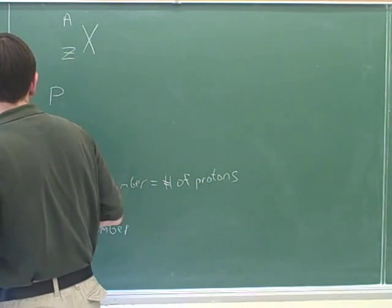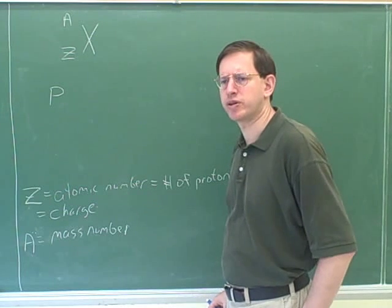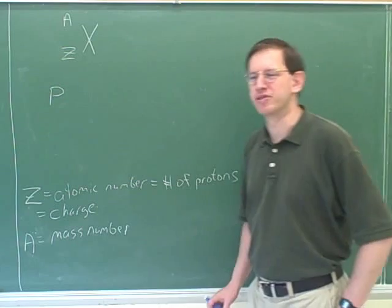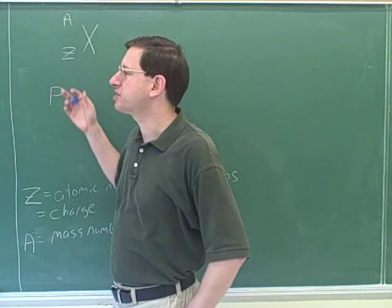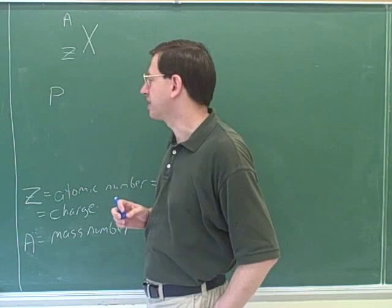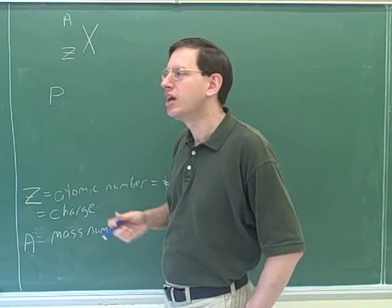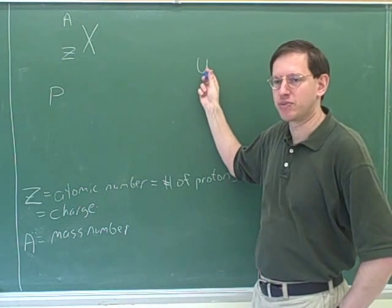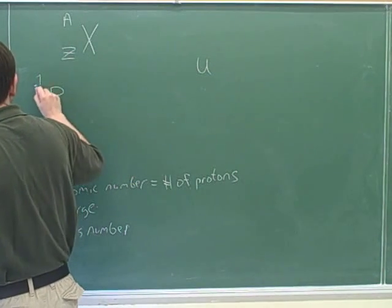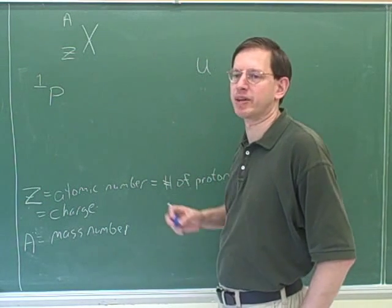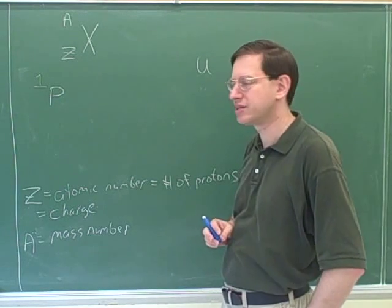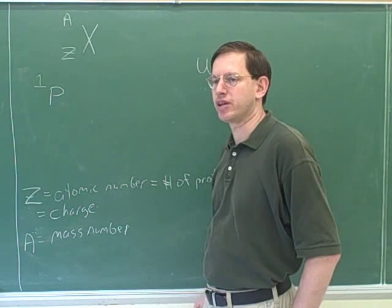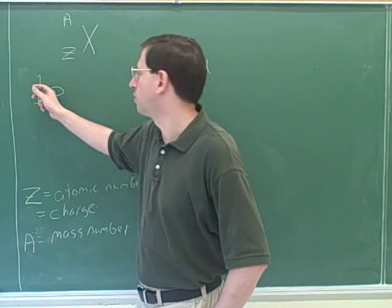Let's think about a proton. What would be the mass number of a proton? The mass of a proton in kilograms is about 10 to the negative 27 kilograms, but that's not a convenient number. So instead we use the unit U, which stands for atomic mass units. The mass of a proton is one atomic mass unit. And the Z number for the proton — since we treat Z as a measure of charge — would be one. So a proton has a charge of one and a mass number of one.